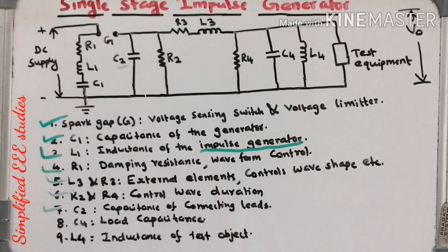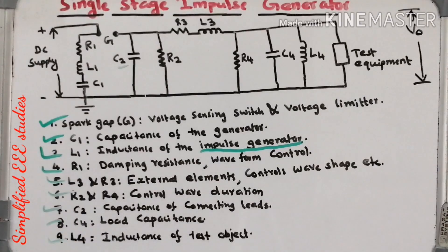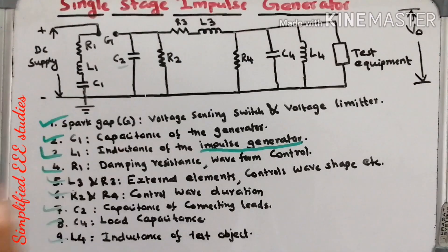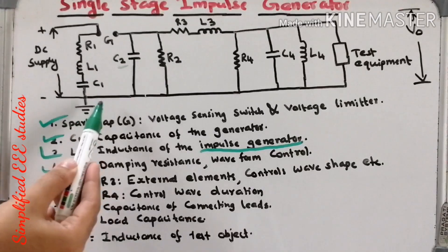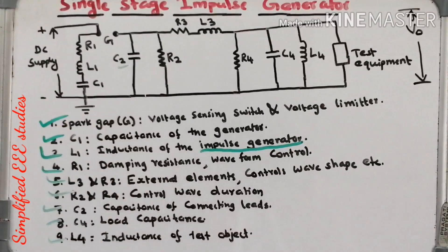Finally, L4 represents the inductance of the test object. These are the basic components required for a single stage impulse generator. Mainly the charging and discharging action of capacitor C1 takes place here.